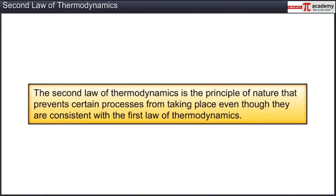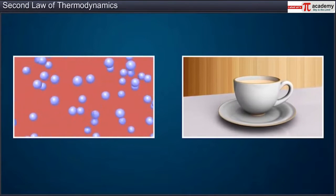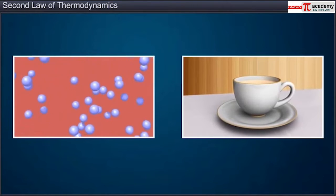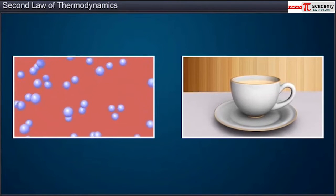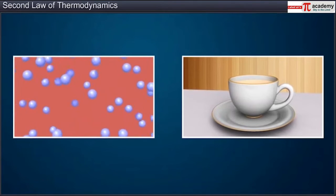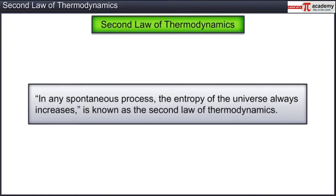Hence there must be a law in nature that decides whether a process allowed by the first law of thermodynamics actually takes place or not. The second law of thermodynamics is the principle of nature that prevents certain processes from taking place even though they are consistent with the first law. Since all processes in nature occur spontaneously — that is, irreversibly — it follows that the entropy of the universe is increasing continuously.